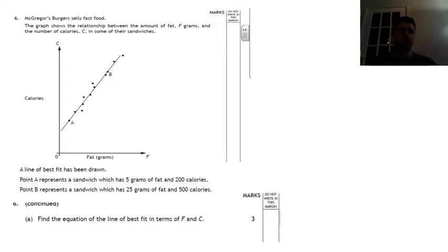But a couple of things here it says, you write us Burgers sells fast food, suppose the relationship between two, shows you two points and it says find the equation in terms of F and C. So it's a straight line, you can see that.